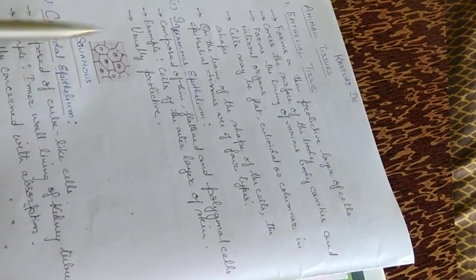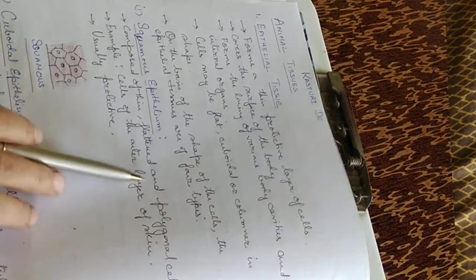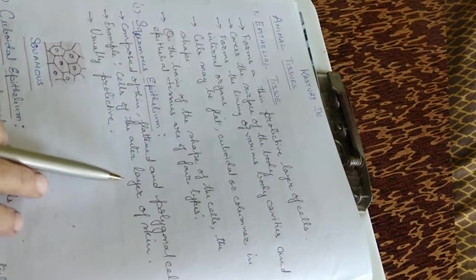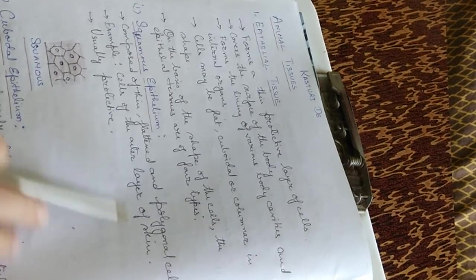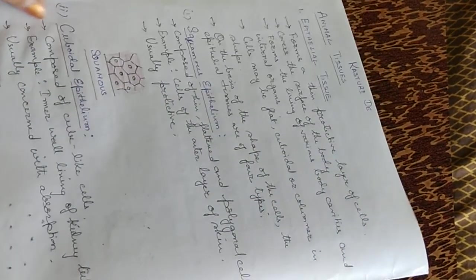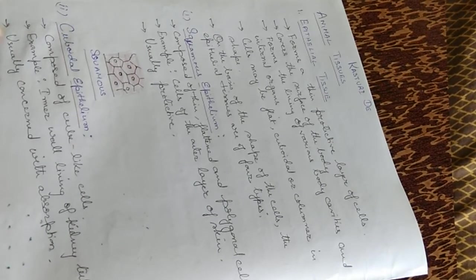Squamous epithelium is composed of thin, flattened, and polygonal cells. For example, the cells of the outer layer of the skin. They are usually protective in function. They look like this type of arrangement in the squamous epithelium.